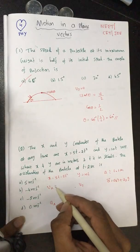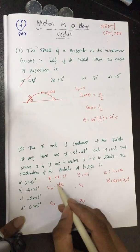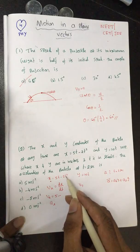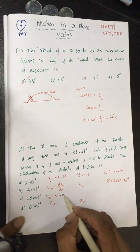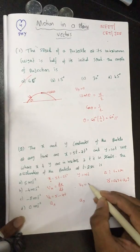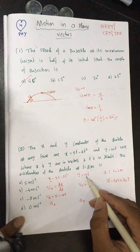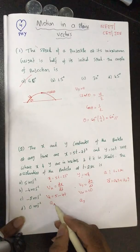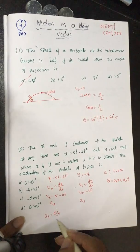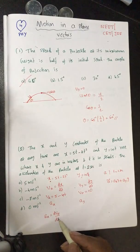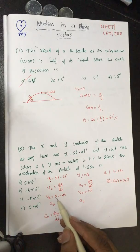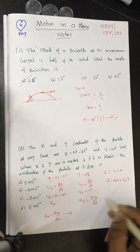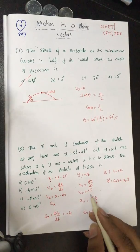vx = dx/dt. Differentiating x = 5t − 2t² gives vx = 5 − 4t. For vy = dy/dt, differentiating y = 10t gives vy = 10. To find ax, differentiate vx with respect to time: ax = dvx/dt = −4. For ay, differentiating vy = 10 gives ay = 0, since 10 is a constant.